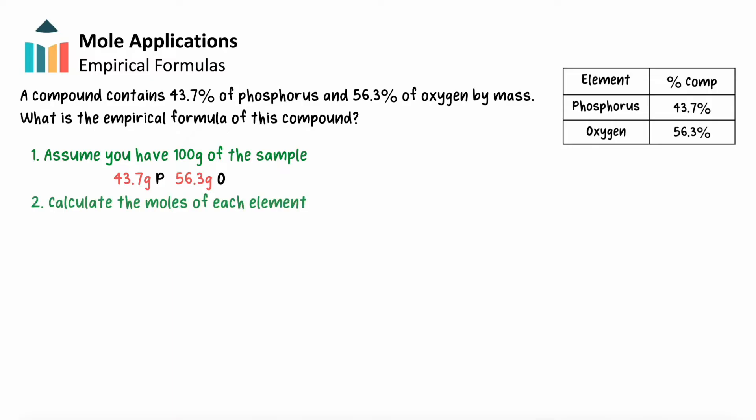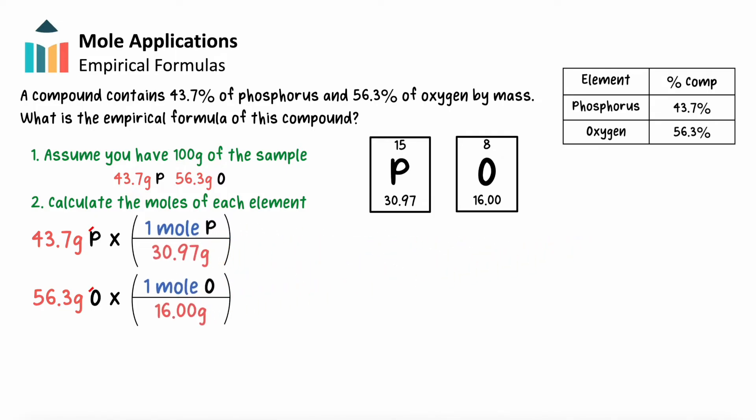From here, we'll determine the number of moles of each element present. We'll take the mass of each element in the sample and divide it by the respective molar mass, which we find using the periodic table.